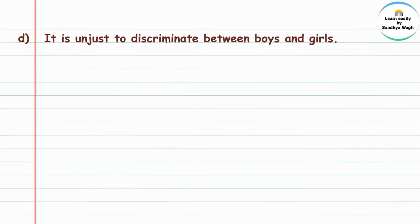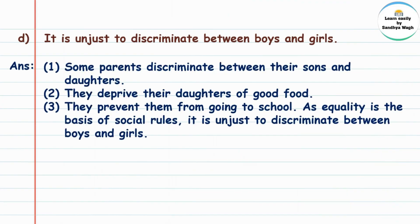It is unjust to discriminate between boys and girls. Some parents discriminate between their sons and daughters — 'discriminate' manje bhedbhav. Some parents deprive their daughters of good food and prevent them from going to school. As equality is the basis of social rule, it is unjust to discriminate between boys and girls.